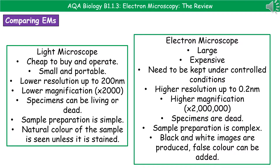If we take a moment to compare light microscopes with electron microscopes, I've given you a box of facts for each one. The light microscope has a few key advantages: it's cheap to buy and operate, and it's also incredibly small and portable. If you want to go and observe things in the middle of a jungle or the rainforest, you can take a light microscope with you and view things there in the field. It can also view specimens that are either living or dead, and we can prepare samples really quite easily. We can also see the natural colour of the sample, unless we've used a stain. However, there are some disadvantages — it's got a lower resolution, up to only about 200 nanometers, and a lower magnification, up to only about 2,000 times.